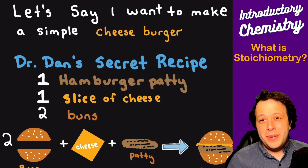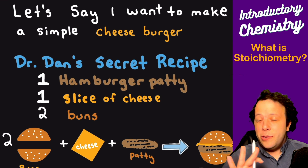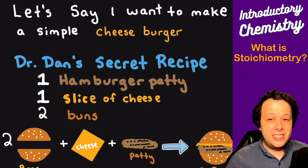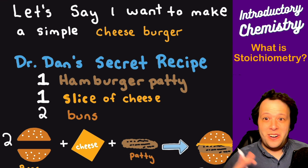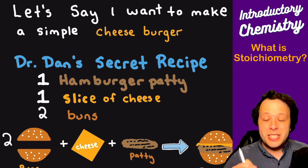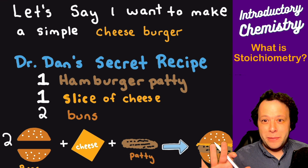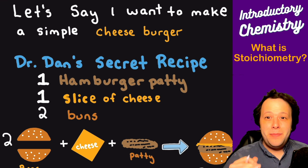Let's say I want to make a simple cheeseburger. If you were cooking at home, you'd probably follow a recipe — look it up or just mix things from memory — but either way, you're following some kind of recipe. There's a specific ratio between all the ingredients to make the thing you want. If you don't follow it, you might try to make bread and end up with a cake — completely different things.